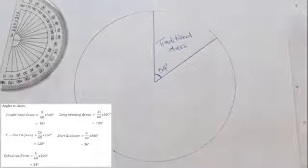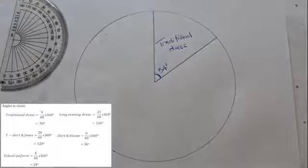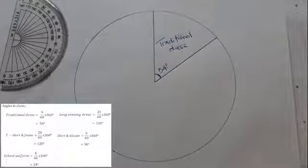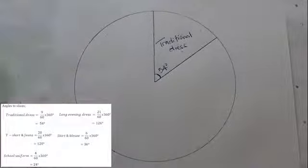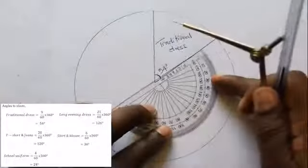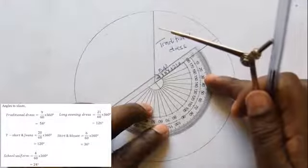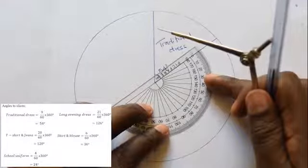In this case, traditional dress corresponds to 54 degrees, long evening dress corresponds to 126 degrees.